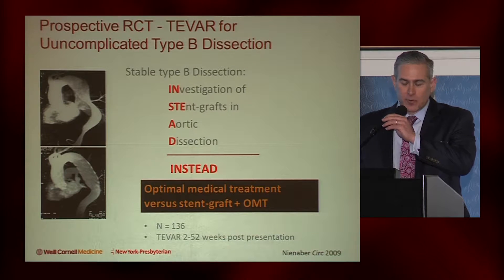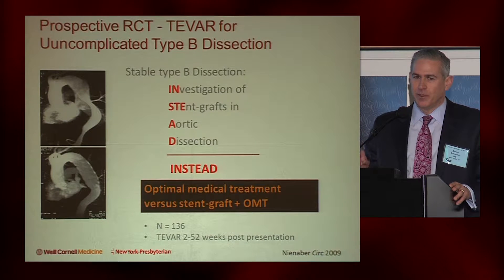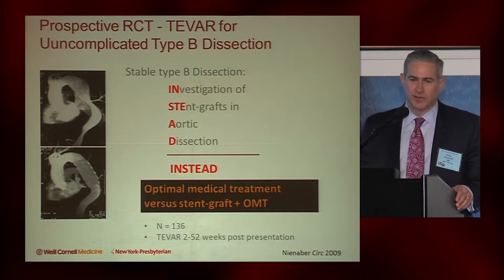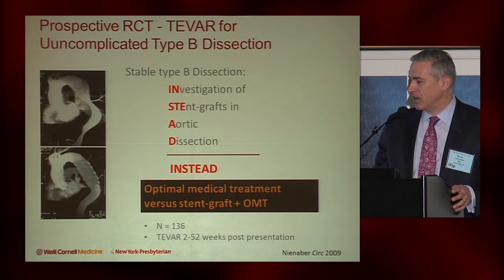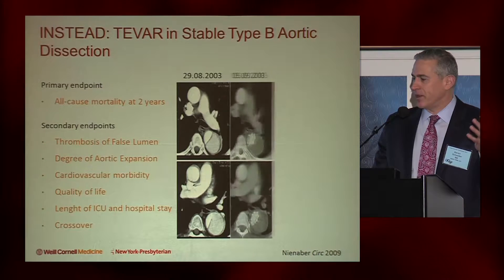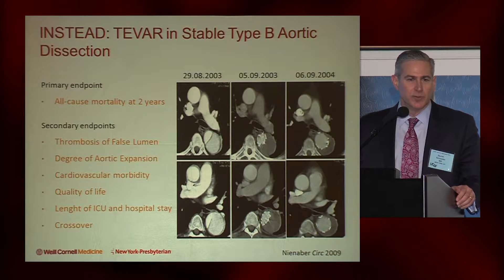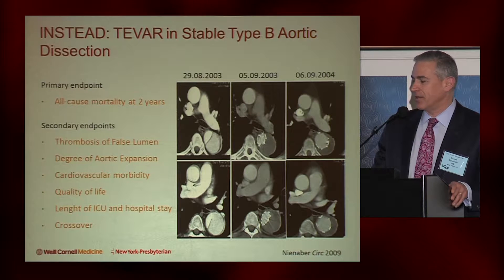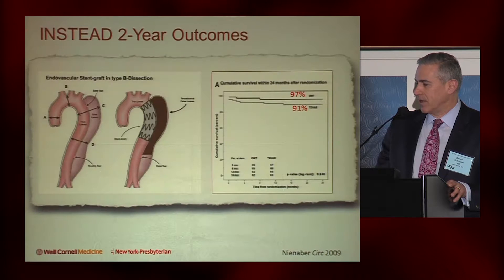It's important to note that these are not acute dissections. These patients were enrolled two weeks to 52 weeks after their initial dissection — so they're more properly termed a subacute group. The primary endpoint was a two-year endpoint looking at all-cause mortality, as well as secondary endpoints including favorable remodeling and quality of life.